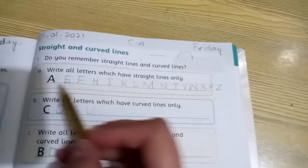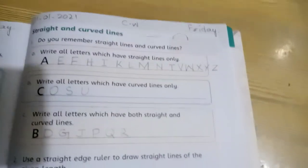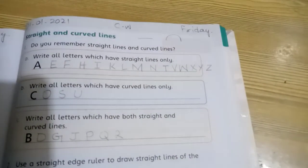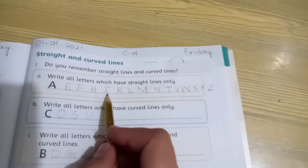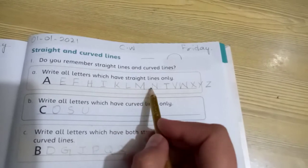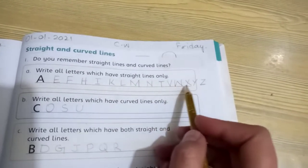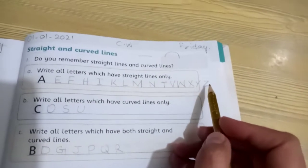Okay, that is A E F H I K L M N T V W X Y Z. These are the letters that have only straight lines.